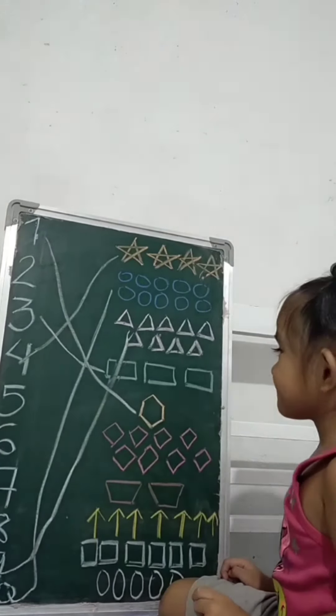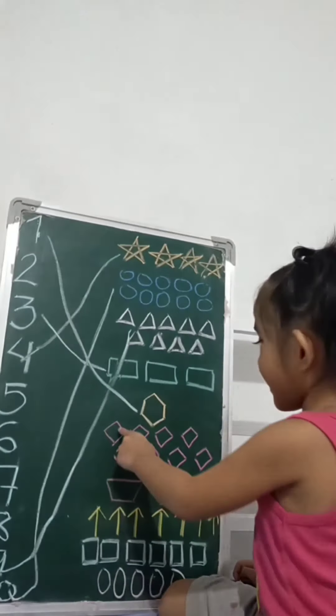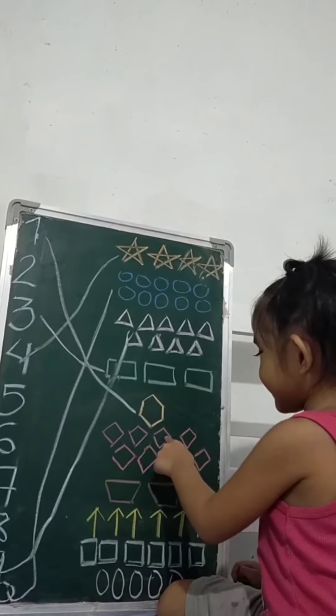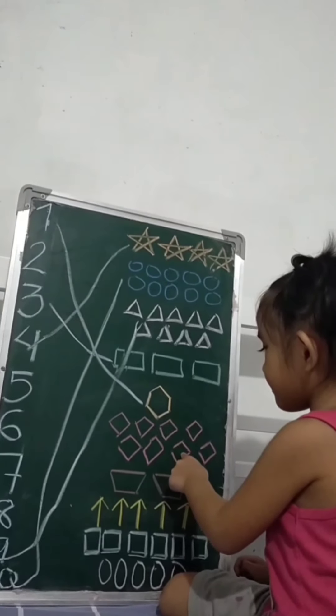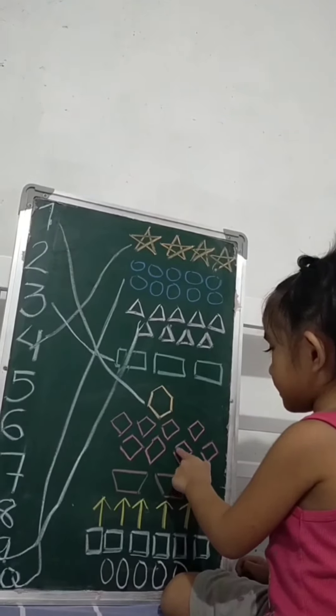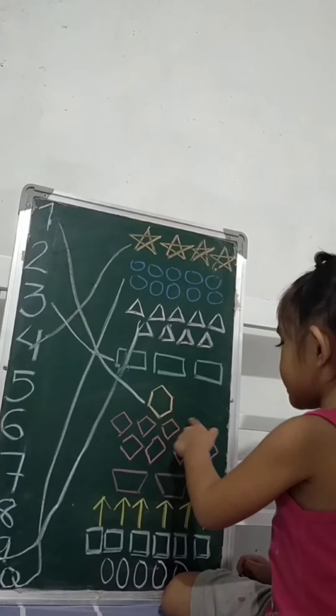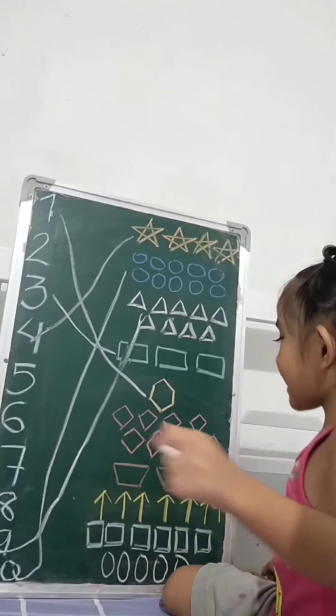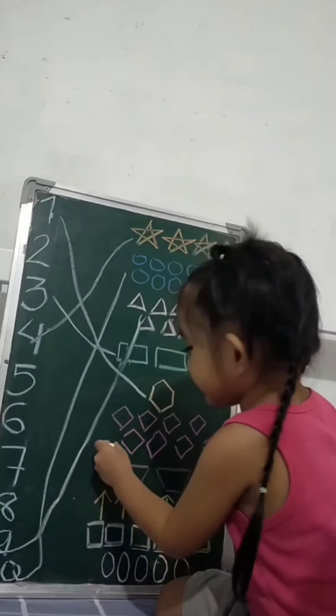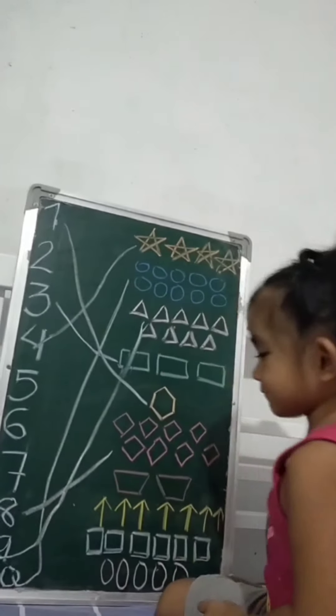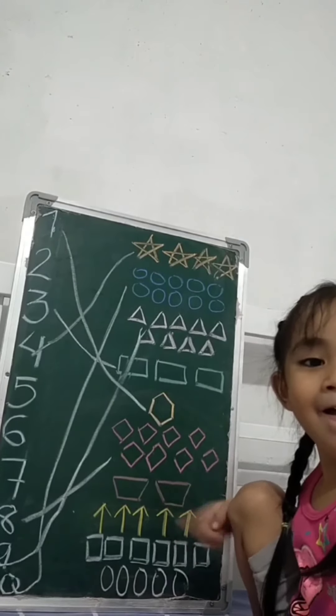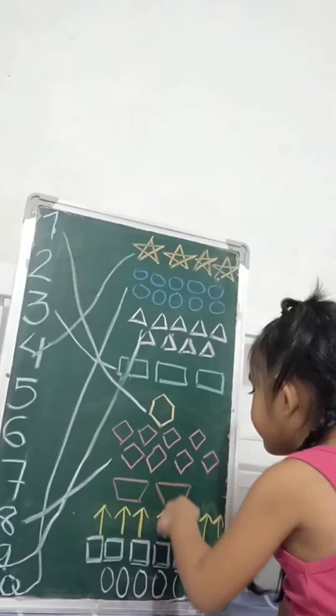Very good. Next. How many diamonds? One, one, one, one, one more. One, two, three, four, one, six, seven, eight. Eight. Okay, next one. How many trapezoids? One, one, two. Two.